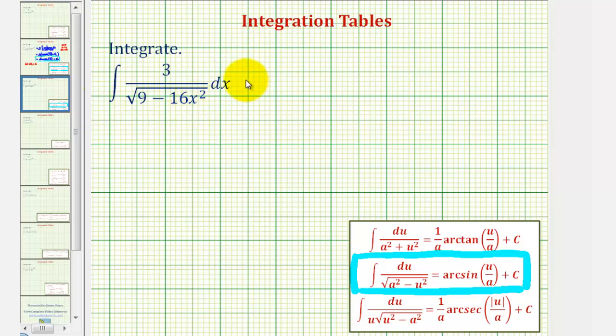So let's rewrite this as three times integral of one divided by the square root of the quantity. Let's write nine as three squared minus, let's write 16 x squared as four x squared.